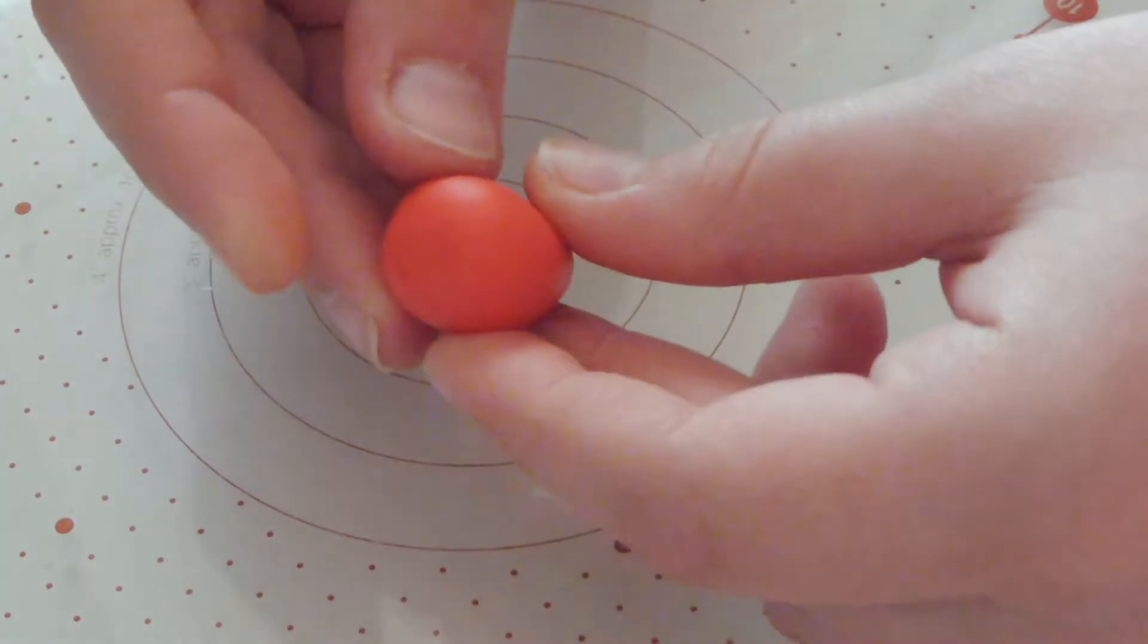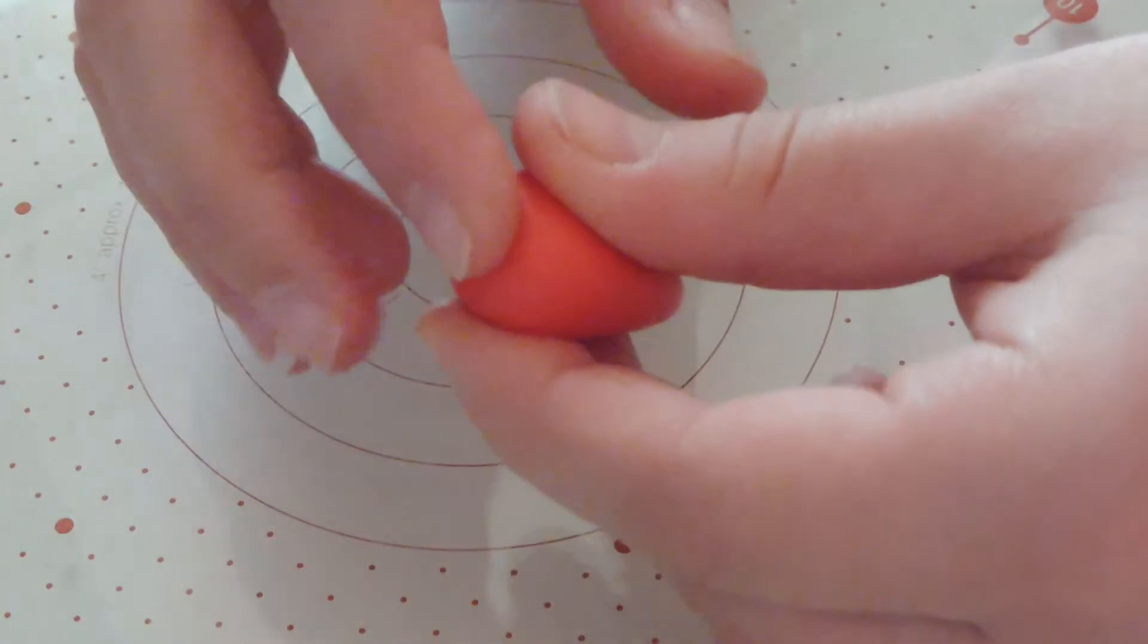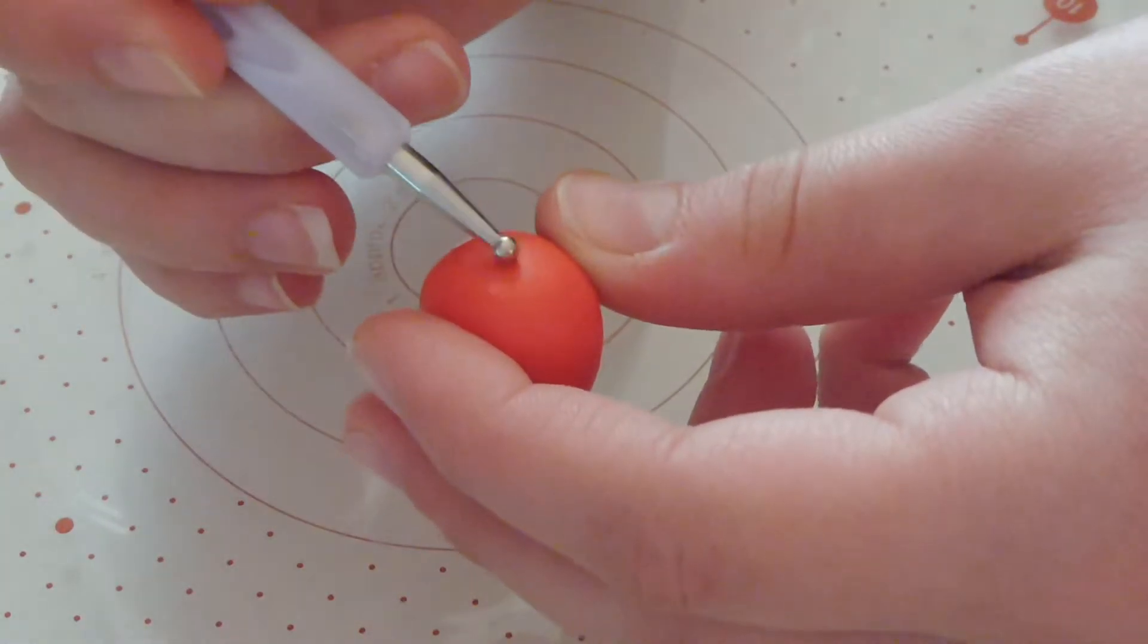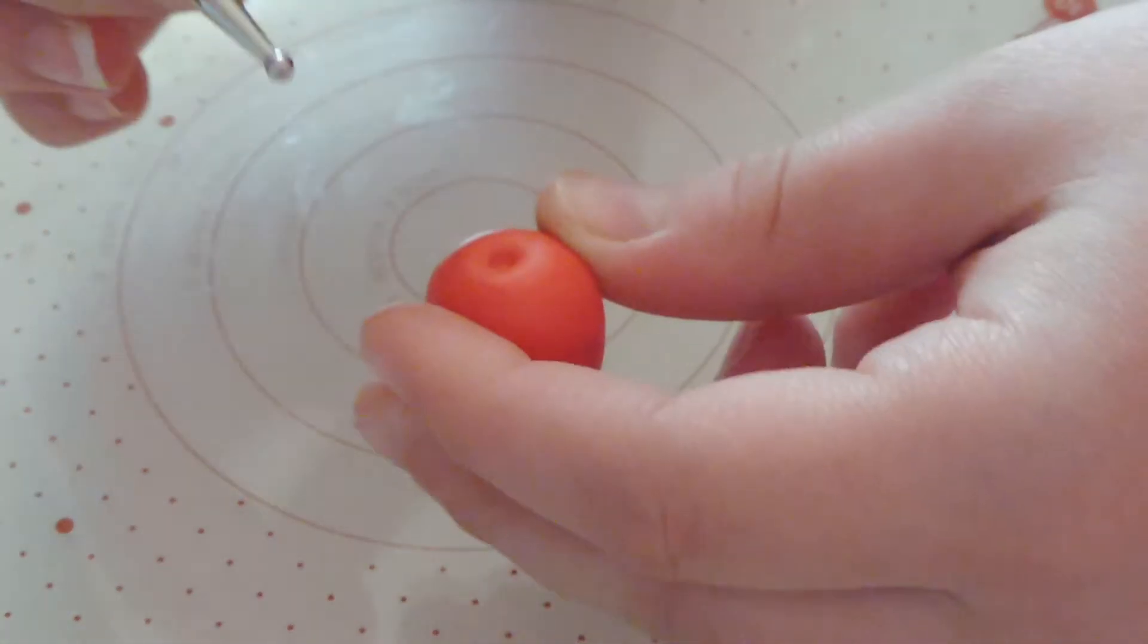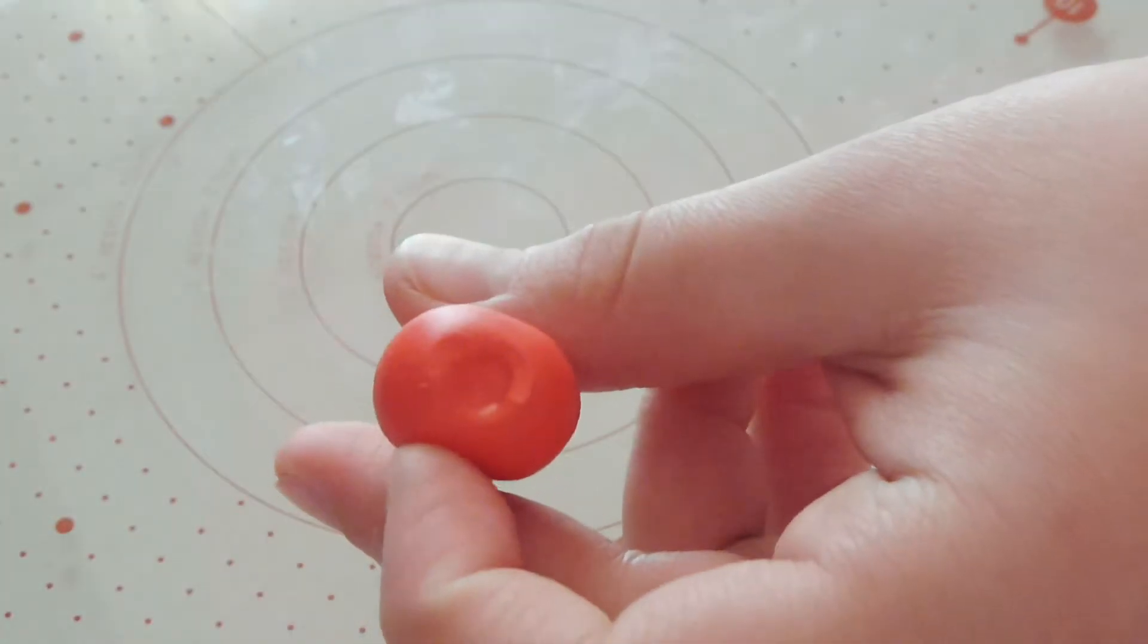Now once this is done you're just going to kind of push the top of your strawberry a bit to create a slight flat head, and using a ball tool you're going to open a small kind of indent which you're then going to make larger basically. And this is where our stalk and leaves are going to go.